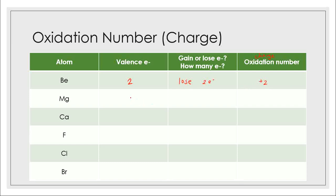What about magnesium? It also has two valence electrons. It will lose them because magnesium is a metal, so it will lose all two — giving an oxidation number of plus two. What about calcium? Calcium also has two valence electrons. It will also lose two electrons because it is a metal, so again the oxidation number is plus two.